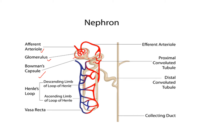The filtrate then passes through the Loop of Henle, followed by the Distal Convoluted Tubule (DCT), and finally into the collecting duct. The final product — urine — is collected in the collecting duct and then passed into the ureters.